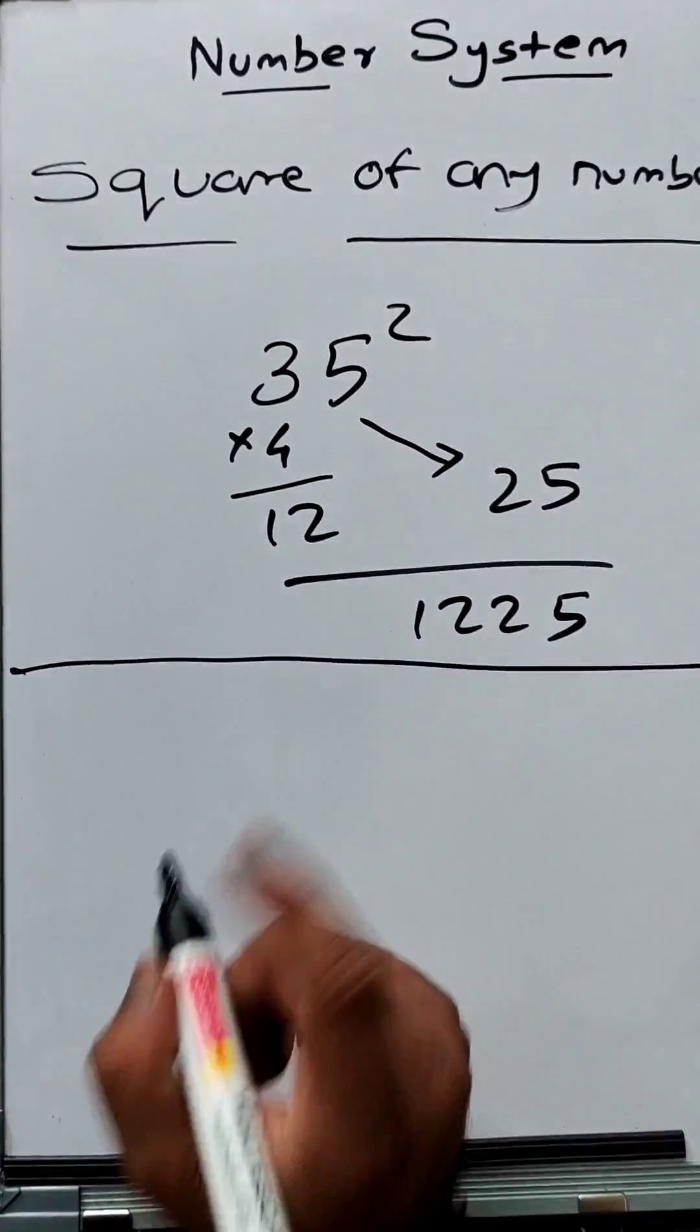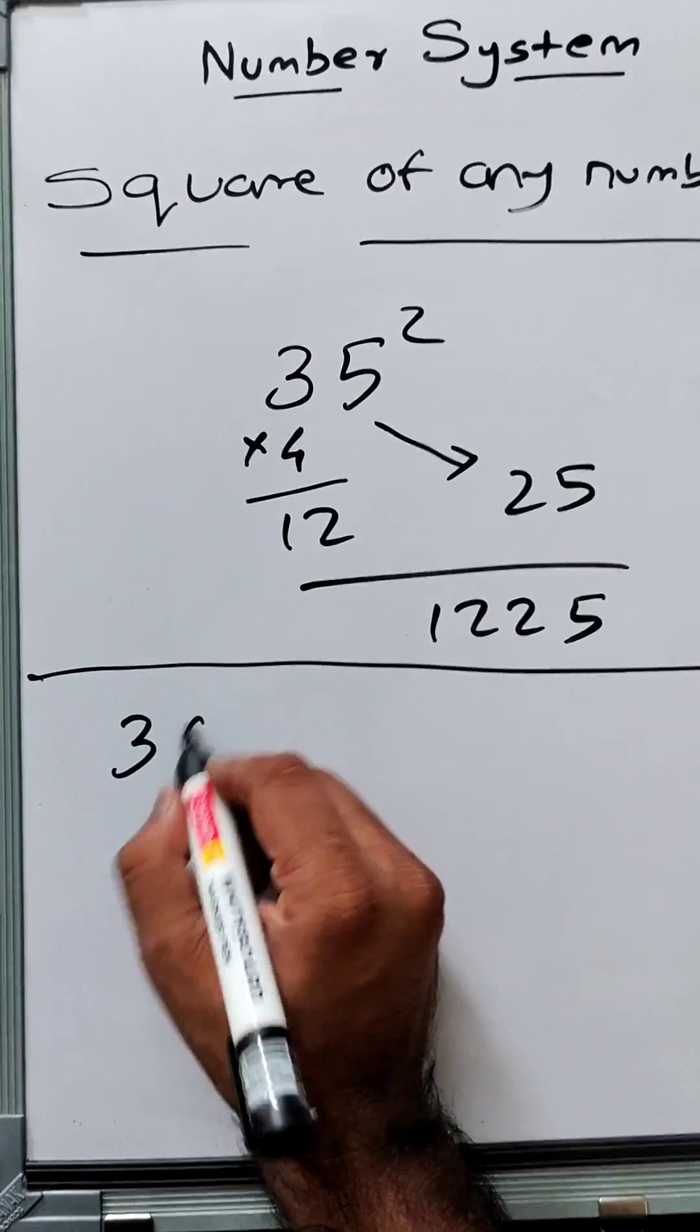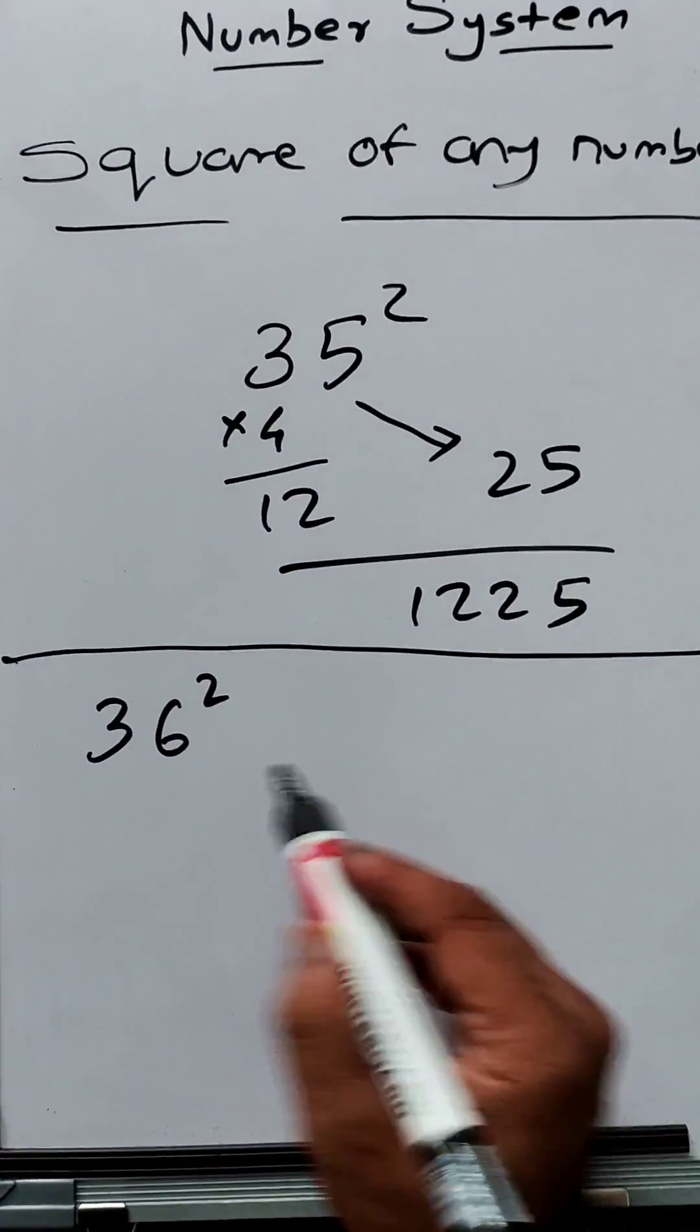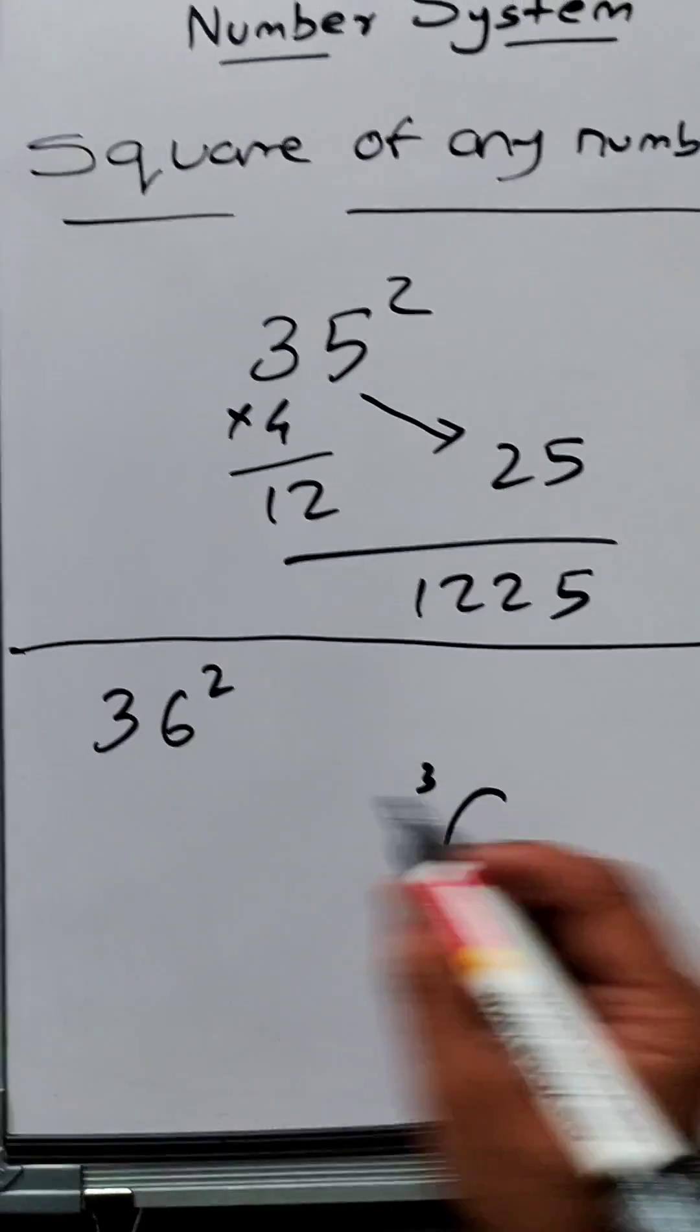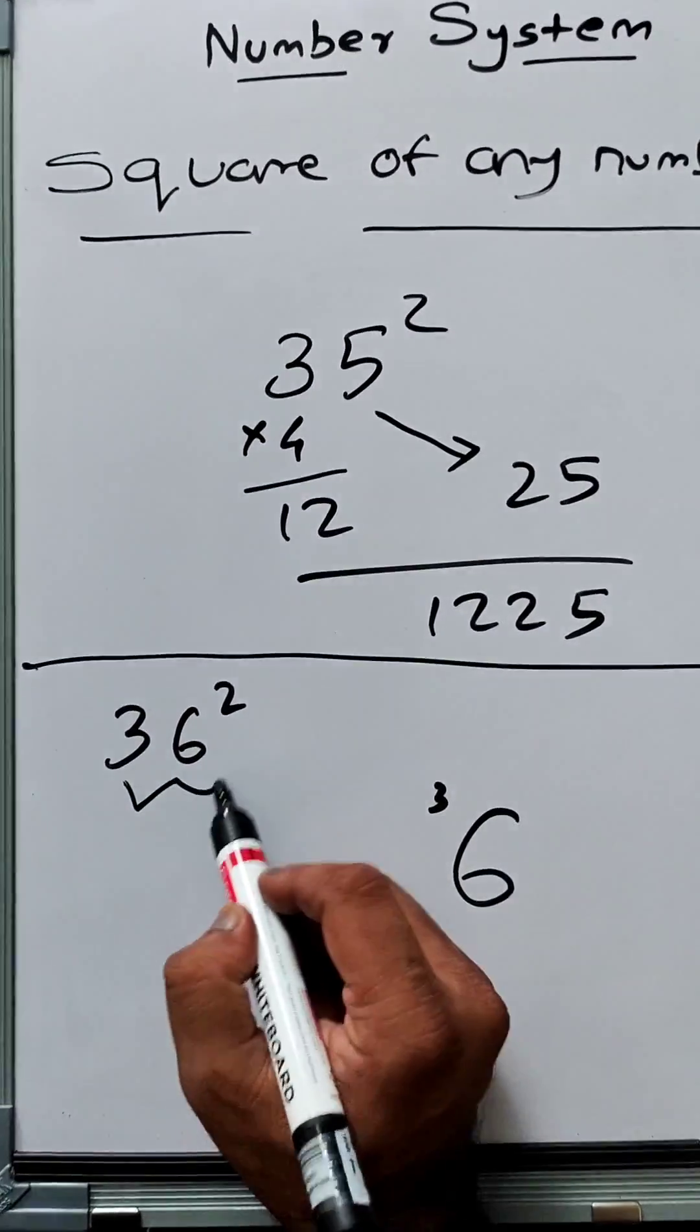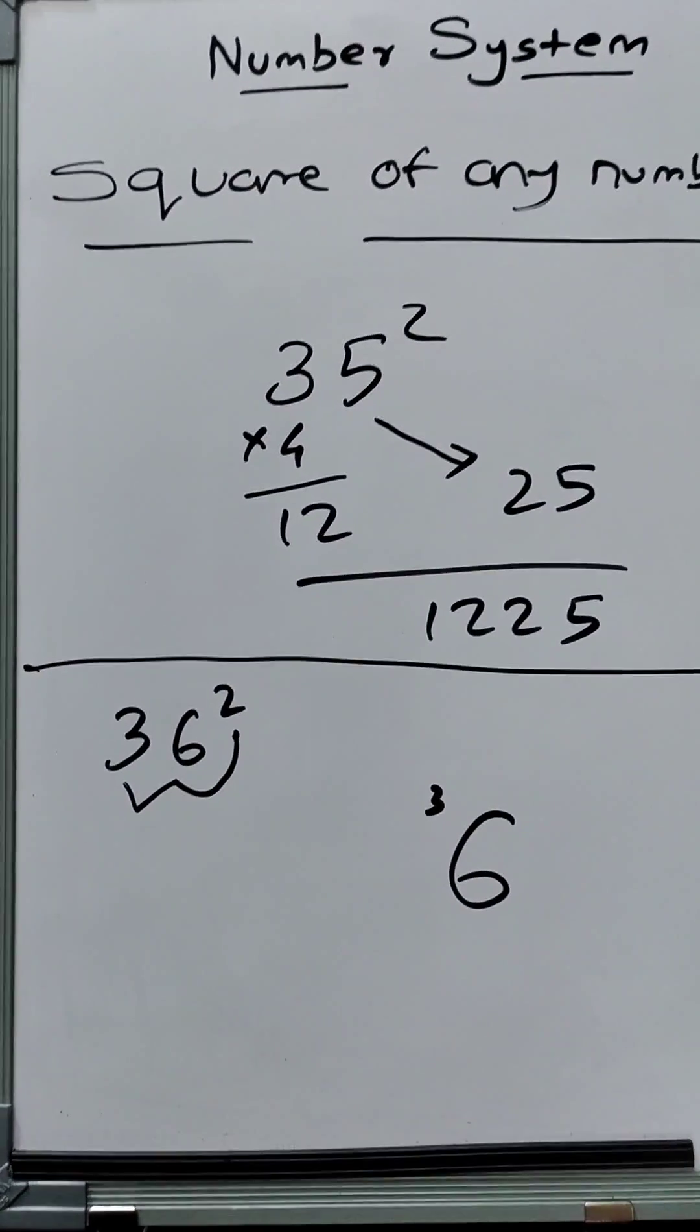36 squared. What we do is write down 6 squared, which is 36, but write down 3 very small as if it is carried. Then the next step: we do 3 into 6 into 2, which is 36, and then add this carry, which is 39. So again, write it like this: 39.